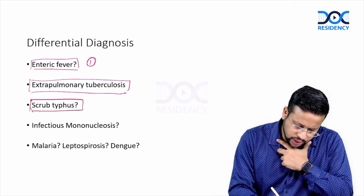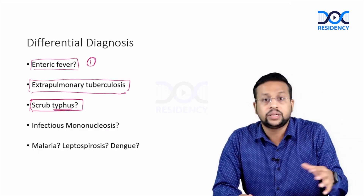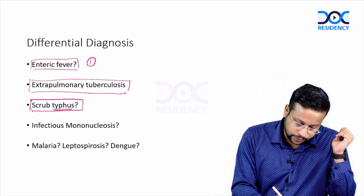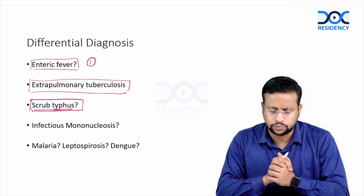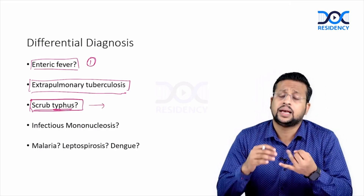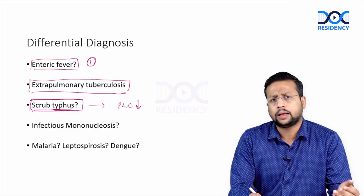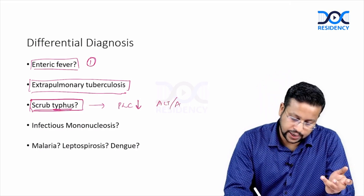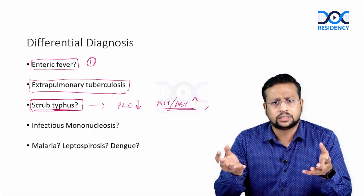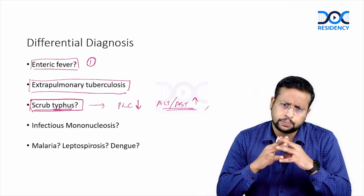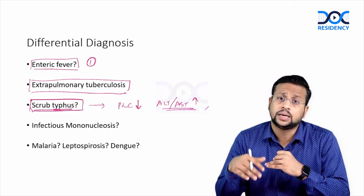Scrub typhus is also a differential — note that typhoid fever is also called typhoid, and typhus can mimic it. Scrub typhus is the form of typhus seen in our country and can cause prolonged fever lasting 1 to 2 weeks. It is usually associated with severe headache and myalgias. Being a rickettsial infection, you get a low platelet count (thrombocytopenia) and transaminitis with elevated ALT and AST. Patients can develop complications like renal impairment, hepatic dysfunction, and jaundice. So scrub typhus is a strong differential, especially with fever of 1–2 weeks duration, severe headache, thrombocytopenia, and transaminitis.